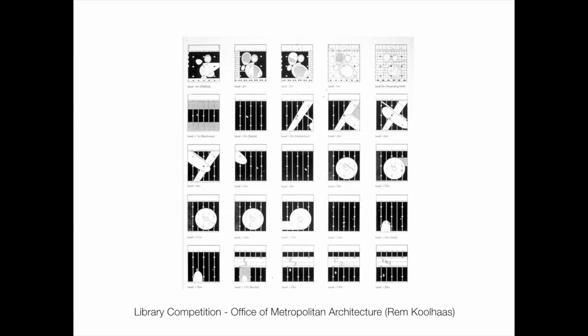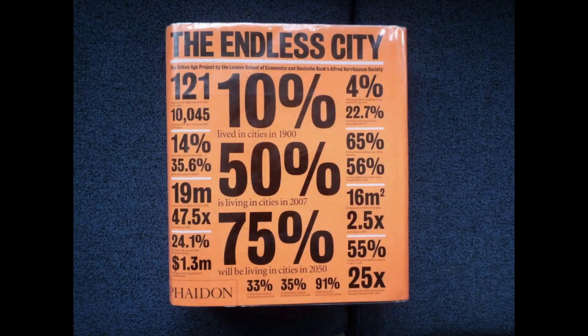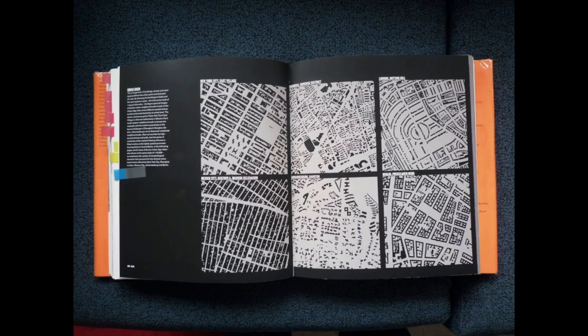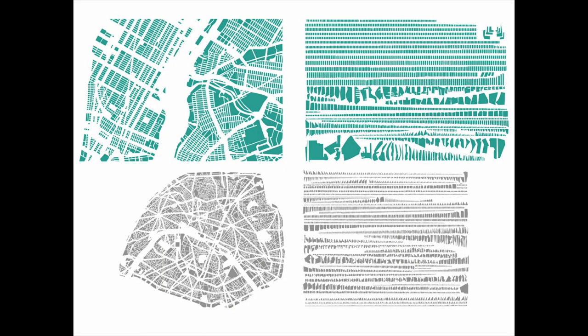Here are a bunch of plans using the same diagrammatic strategy—section, then flipped to plan, same solid and void setup. This example from a book called The Endless City uses the same idea, bridging into color coding as a hybrid. They've broken down components of cities and then reorganized them based on all the little blocks—just a different way of looking at it.